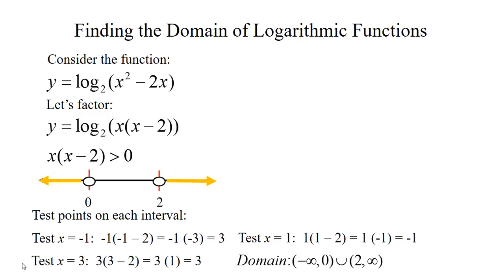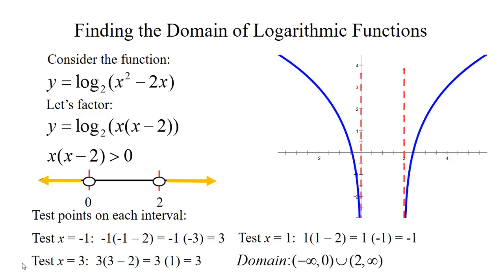That means we have two branches of our graph and two vertical asymptotes — one at x equals 0 and another at x equals 2. We don't have any part of our graph between 0 and 2 because we would be taking the log of a negative. So our two branches are from negative infinity to 0, and from 2 to infinity.